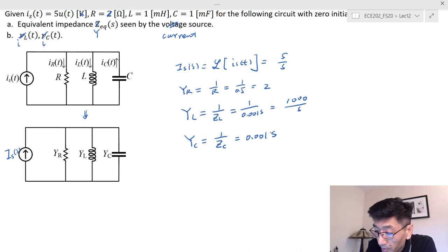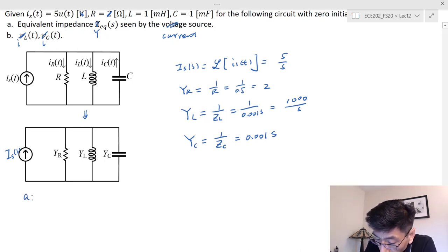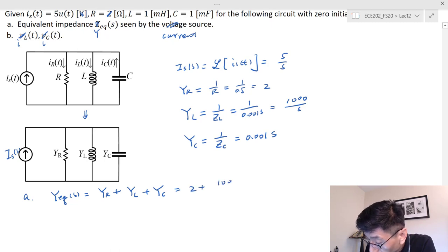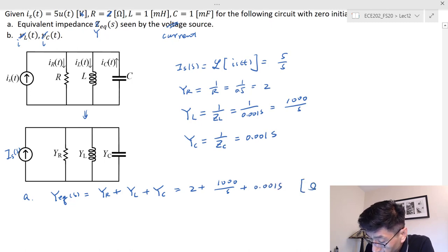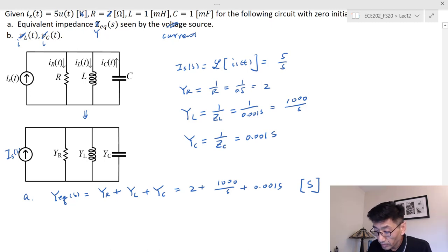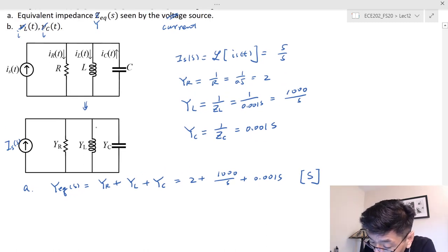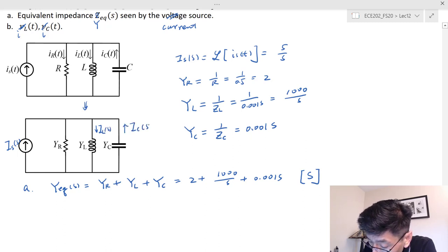These are all the admittances. The equivalent admittance seen by the source — you can also find the impedance by inverting it. Y_EQS equals Y_R plus Y_L plus Y_C, which is 2 plus 1000/s plus 0.001s (Siemens). Now let's label the currents: I_LS for the inductor and I_CS for the capacitor.